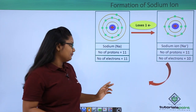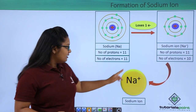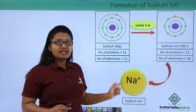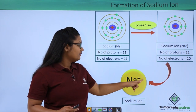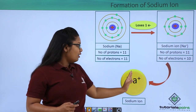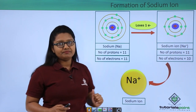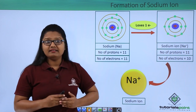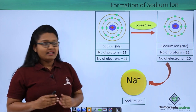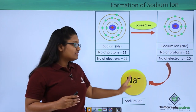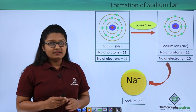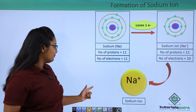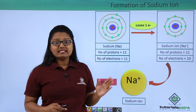This positively charged sodium atom is called a sodium ion. The positive charge that this ion has is written at the top right corner of its symbol. Every positively charged ion is called a cation, and since this sodium ion is positively charged, we call it a cation.